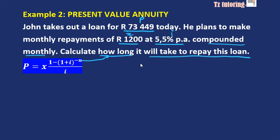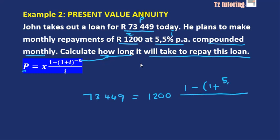Let's plug into the formula. We know P is 73,449, equal to x — the payments of R1,200 — multiplied by one minus (1 plus 5.5% divided by 12) to the power of negative n, all over the interest rate of 5.5% divided by 12, since it's compounding monthly, 12 times a year.